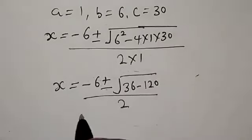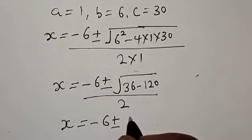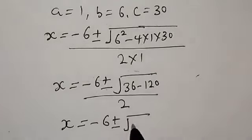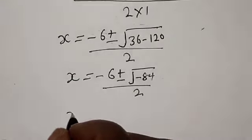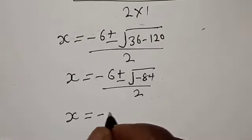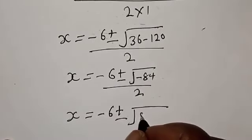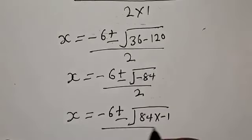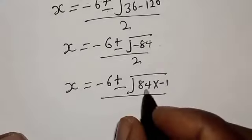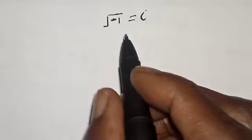So s is equal to minus 6 plus or minus square root of 36 minus 120. That gives us square root of minus 84, over 2. Then s is equal to minus 6 plus or minus square root of 84 times minus 1, over 2.